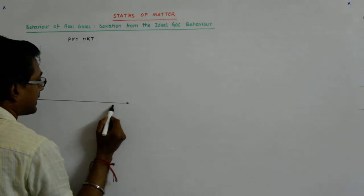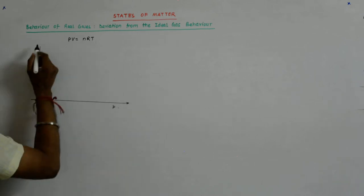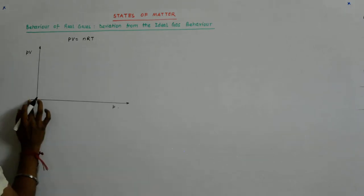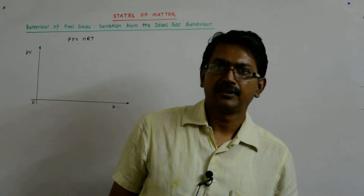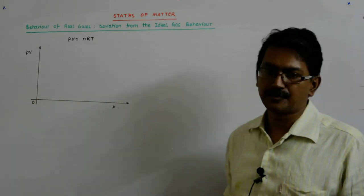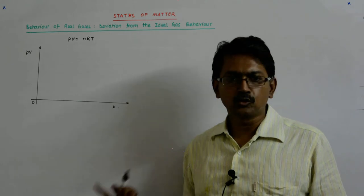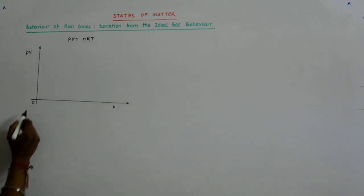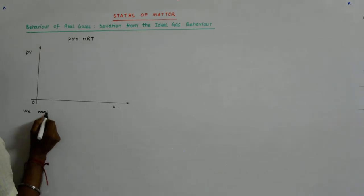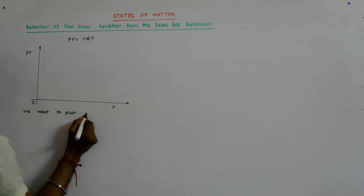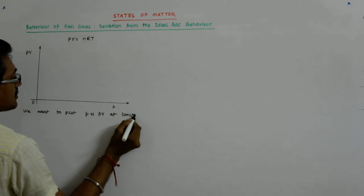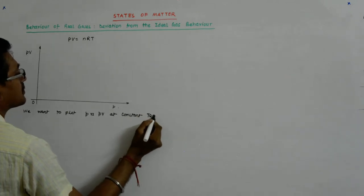Now, if this is P and this is PV, if my x-axis is P and my y-axis is PV, I plan to plot P versus PV at constant temperature.